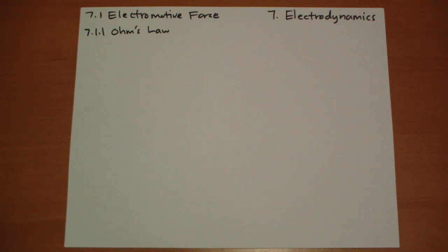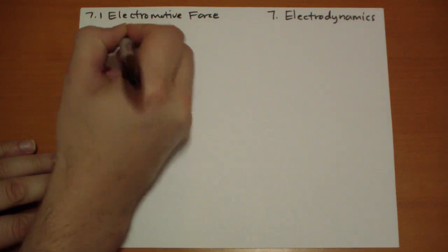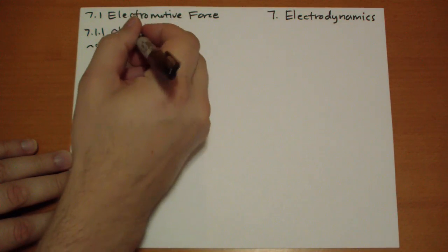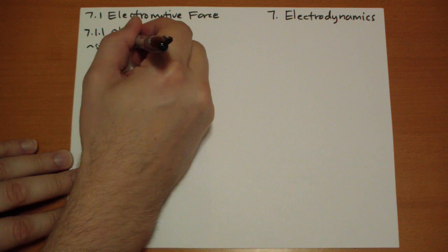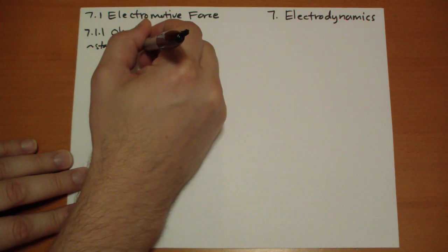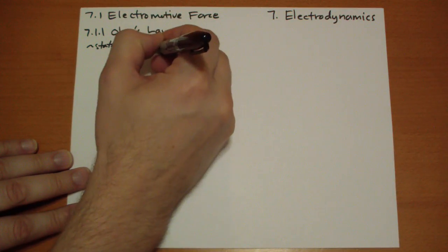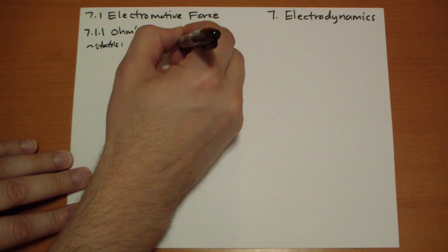Basically, for electrostatics and magnetostatics, the rule is that the change in the charge over time and the change in the current density over time is equal to zero.